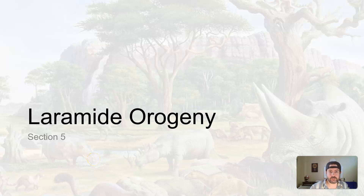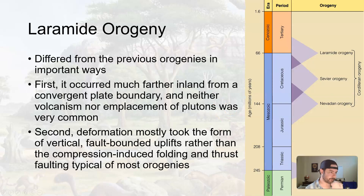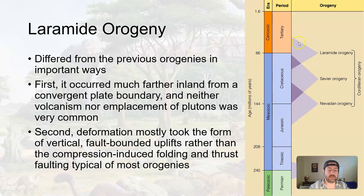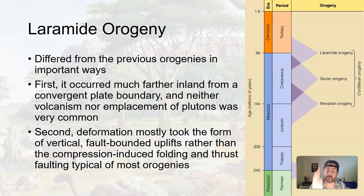Let's finish up talking about the Laramide orogeny. We talked about this in the past because the Laramide orogeny actually began in the Cretaceous but finished in the Cenozoic. It did differ from previous orogenies in a couple of important ways. First, it occurred much farther inland — it wasn't right on the west coast. In fact, it kind of bypassed the areas of the Nevadan and Sevier orogenies and occurred further inland.